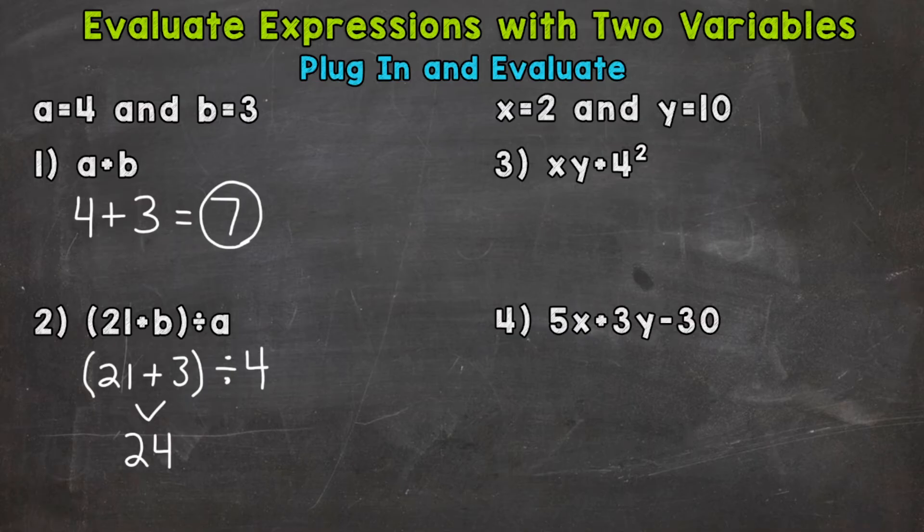Bring down everything we did not use, so the division sign and the 4. So we end with 24 divided by 4, which gives us 6.